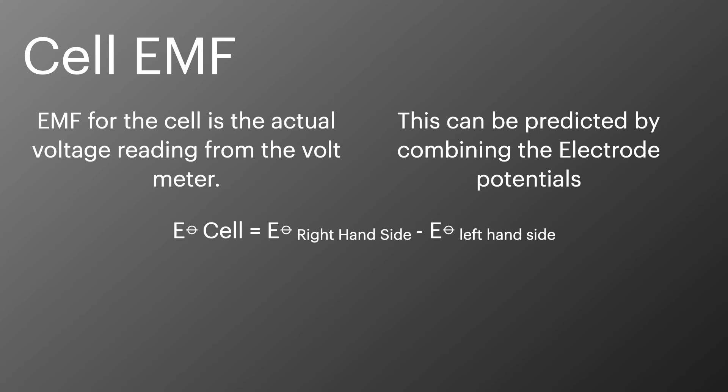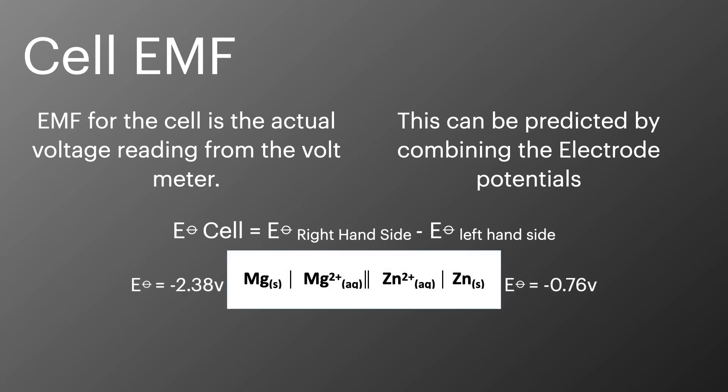So we can draw the cell out like this. We've got the electrode potential for the magnesium cell out there on the left, and we've got the electrode potential for the zinc half cell out on the right. We can combine those together to get an overall cell EMF of plus 1.62 volts.